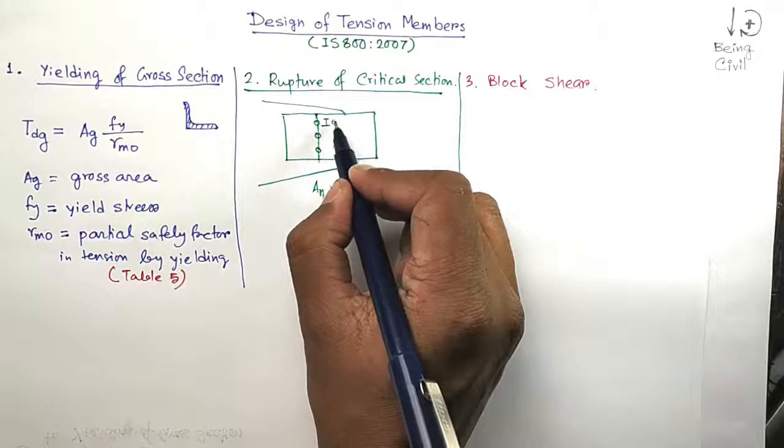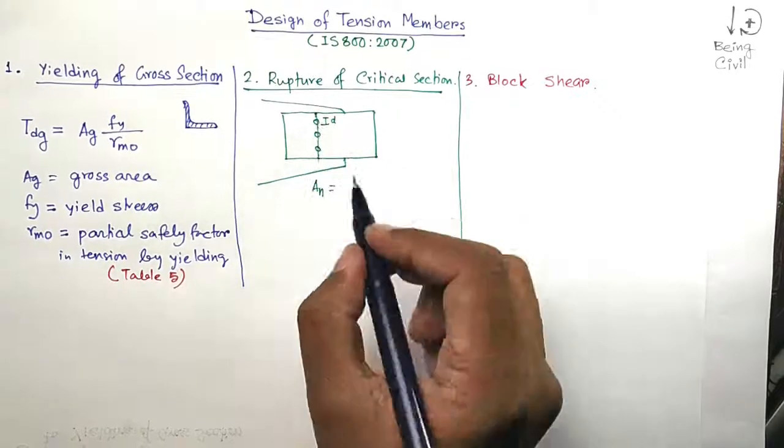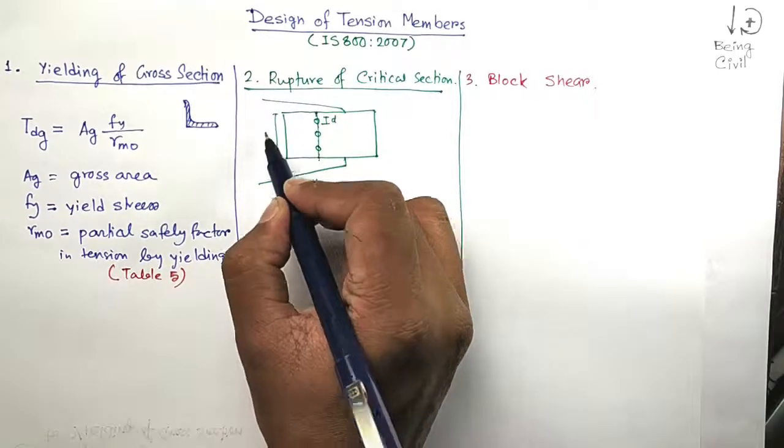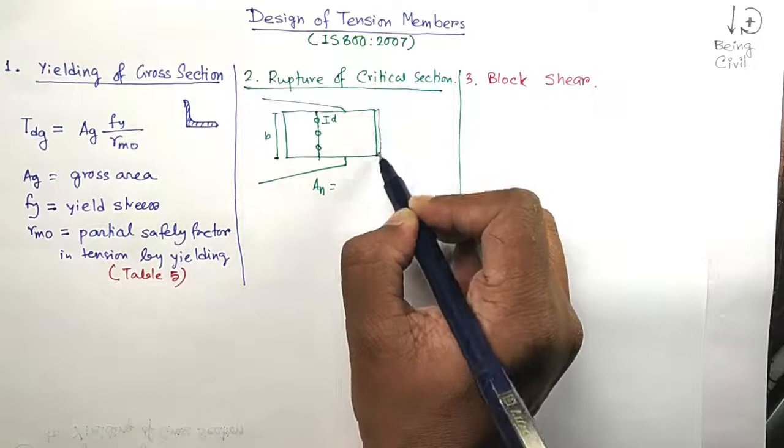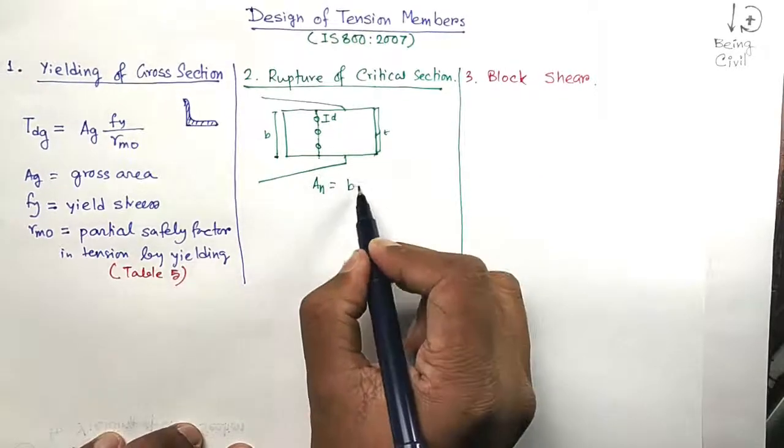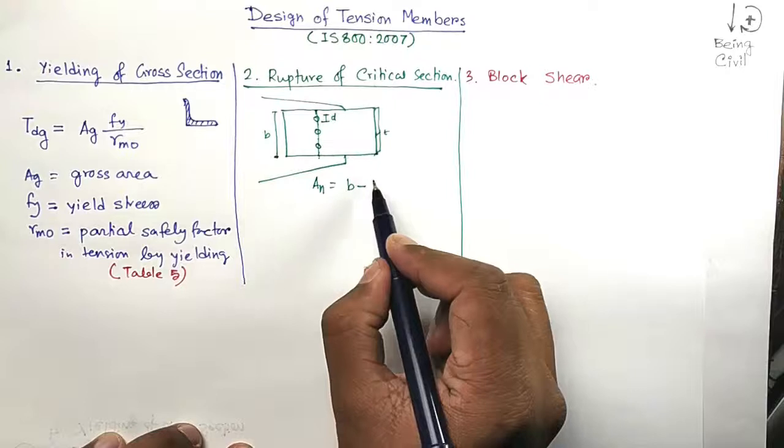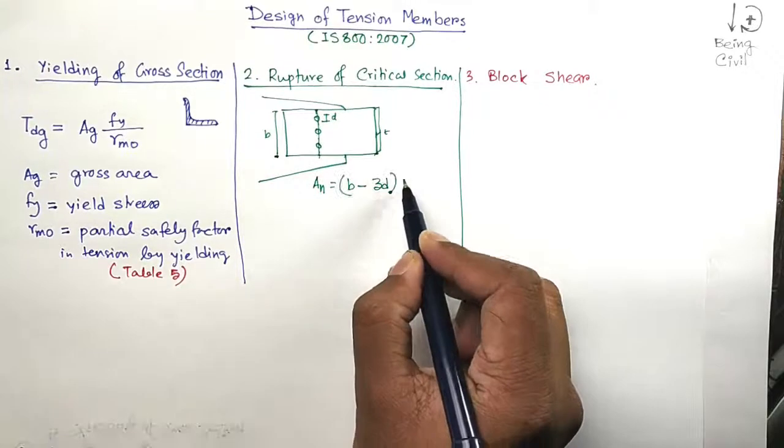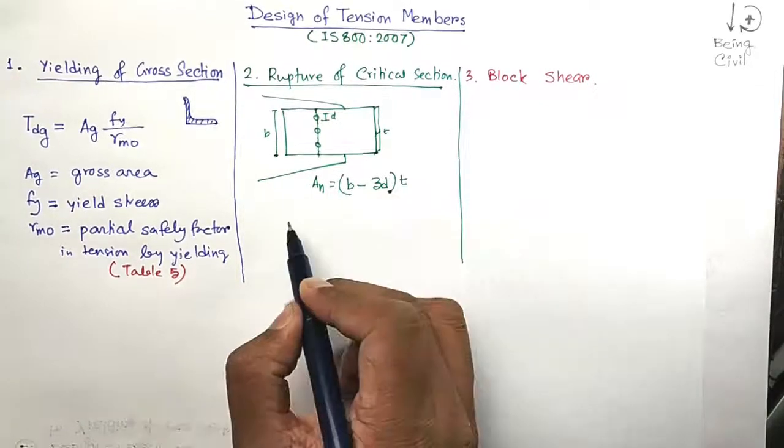Suppose this diameter is D and you have three holes here. And this distance is B and this thickness is T. So it will be B minus three times D times T (for three bolts). Sometimes the bolts arrangement may be staggered like this.